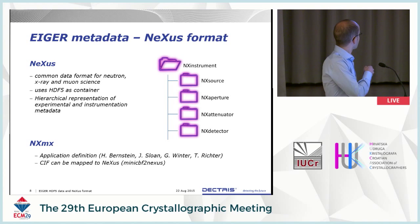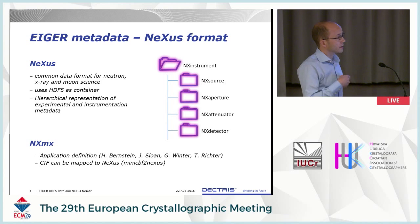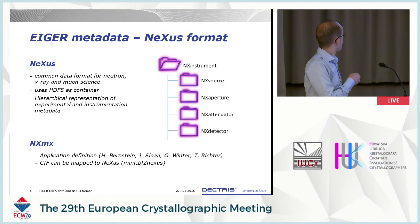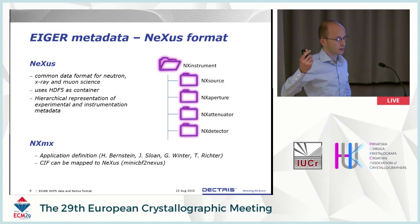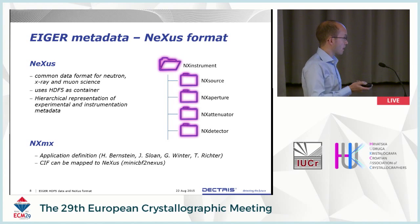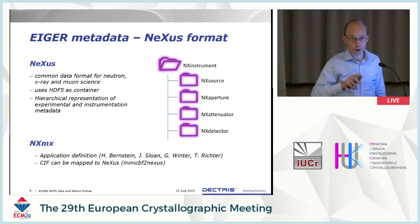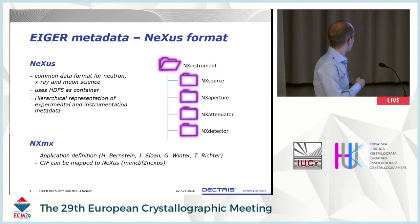Inside Nexus you have Nexus groups, and inside these groups there are data definitions — a bit confusingly, what's inside these groups are called datasets, but this is really the metadata. Nexus also has a number of application definitions, which are subsets of groups and fields written for particular applications. This exists for Laue scattering, small-angle scattering, but also for macromolecular crystallography — this is NXMX. Herbert Bernstein did a lot of work to set this up.